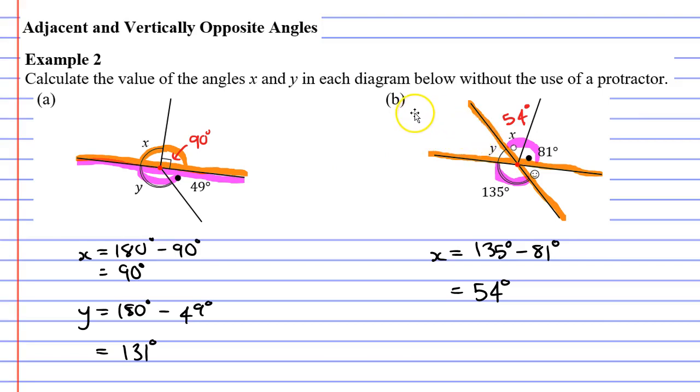There's actually a couple ways we can do this. Probably the easier way would be to focus on this orange line here, this orange straight line. We know that if it's a straight line, the angles add up to 180. Meaning the Y and the 135 degree angle must add up to 180.